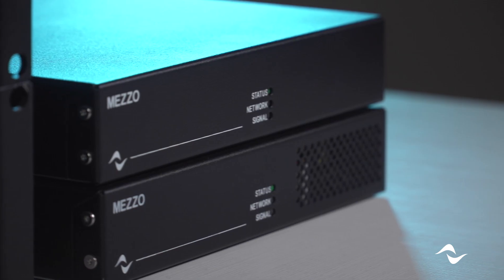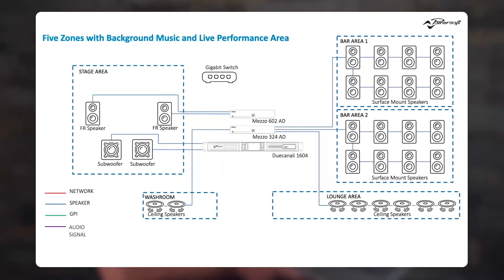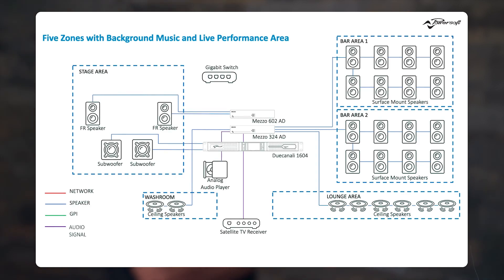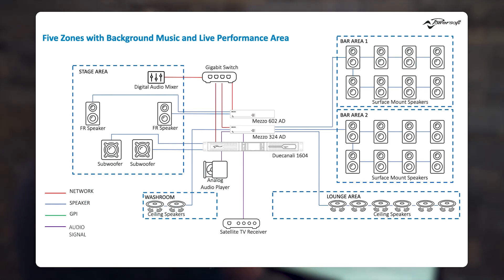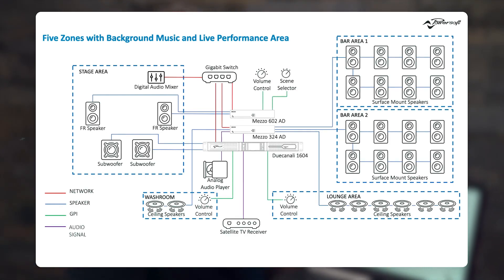Scenes allow for a completely different system setting to be recalled on the fly. They can be recalled via a passive wall controller, via web views or via the app. This replaces in a much better way the project recall from the old operator view, and it integrates mezzo amplifiers. Going back to our sports bar and lounge example, you see all the different zones: a seating area, two different bar areas, a lounge area and washrooms. We can connect them all to the network and connect all the loudspeakers. Adding sources, we can have the TV satellite receiver, the analog audio or BGM player, and the digital audio mixer connected on Dante sending signals into the system. We can then add all the controllers: the volume control, scene selector and source selector.